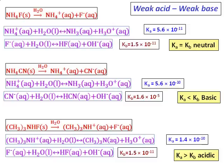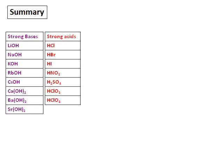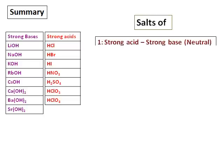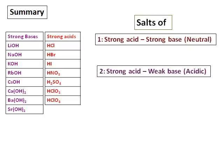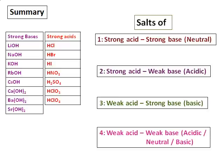For weak acid/weak base salts, it is not as straightforward as the other cases. We need data on acid ionization and base ionization constants to determine whether the solution will be neutral, basic, or acidic. To summarize: remember the strong base and strong acid tables. Strong acid + strong base salts are neutral. Strong acid + weak base salts are acidic. Weak acid + strong base salts are basic. But for weak acid + weak base salts, the solution can be acidic, neutral, or basic depending on the relative Ka and Kb values.